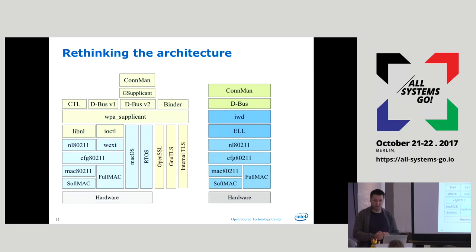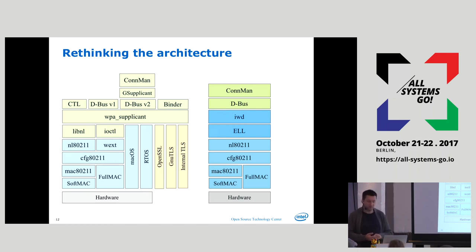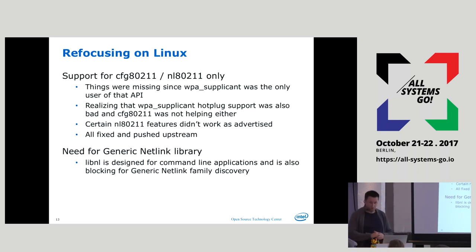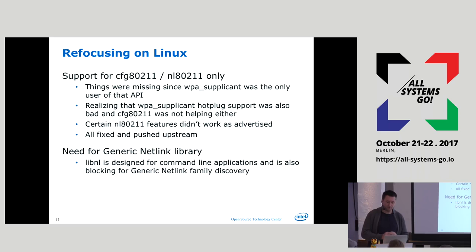We focused on cfg80211. We needed an embedded library underneath it for basic functionality, since we didn't want to use glib anymore, and we also needed extra features like generic Netlink support. Then we want our daemon, a D-Bus interface, and then connect to it — no guessing, looking absolutely identical to what we did with BlueZ and oFono. Refocusing on Linux — forget everything else. We don't want to support Windows, macOS, or RTOS; we want to focus on Linux and use what Linux offers us.